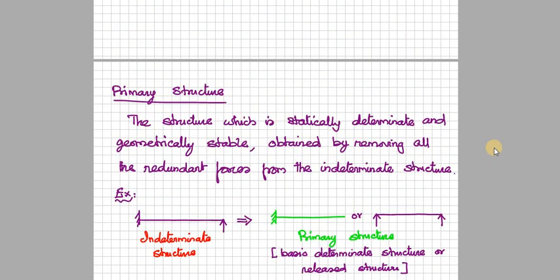Now, the definition for primary structure. I already explained that the structure which is statically determinate and geometrically stable, obtained by removing all the redundant forces from the indeterminate structure. That is, the given structure will be indeterminate structure. First we have to identify the redundant forces. Then, if you remove the redundant forces from the given indeterminate structure,